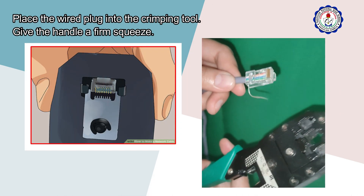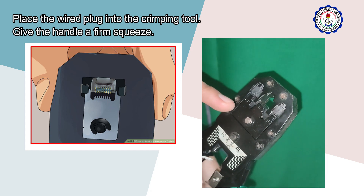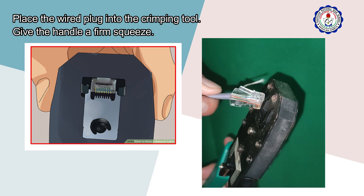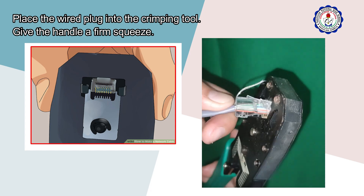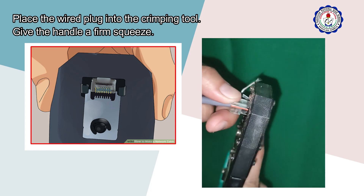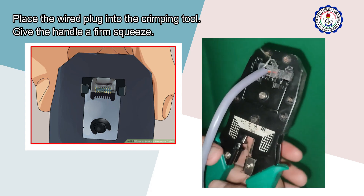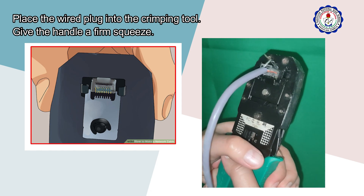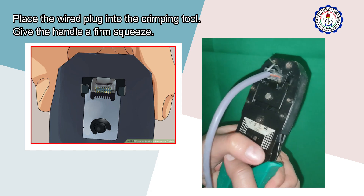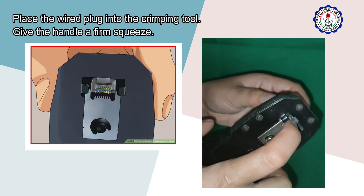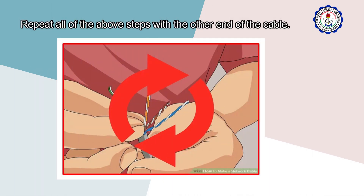Keep the wires flat and in order as you push them into the RJ45 plug with the flat surface of the plug on top. Place the wire plug into the crimping tool and give the handle a firm squeeze. Repeat all of the above steps with the other end of the cable.